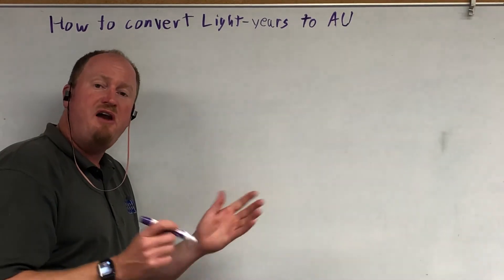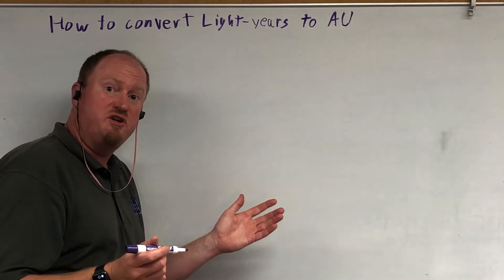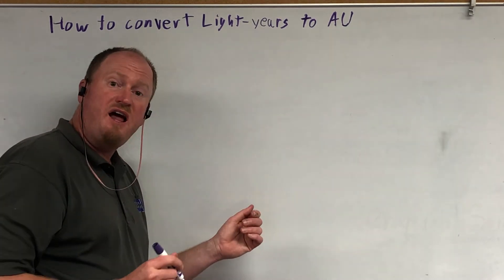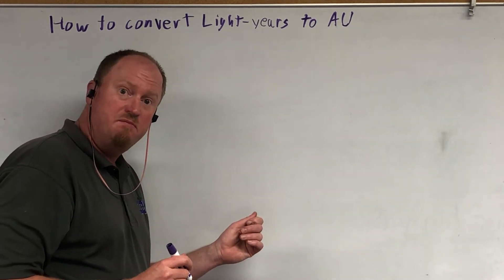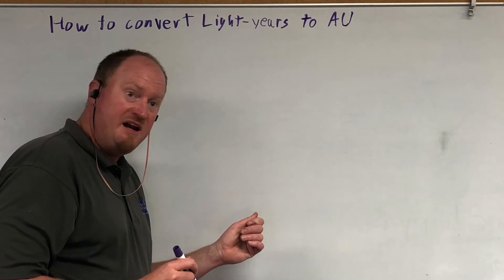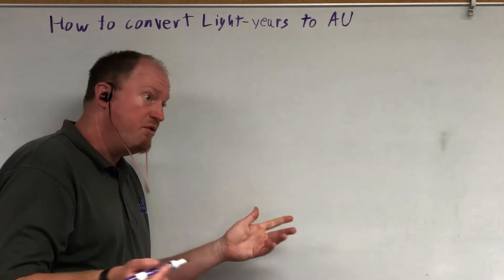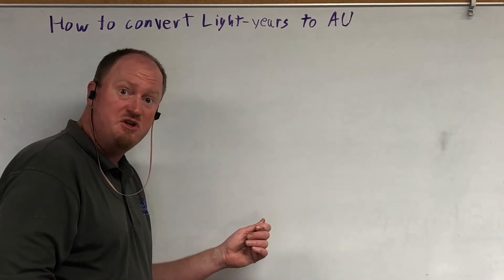How do you convert light years to astronomical units? Light years are how far light travels in a year, in an Earth year. An astronomical unit is the distance from the Earth to the Sun. They both involve the Earth, but they really have nothing to do with each other.